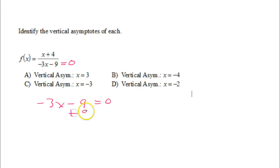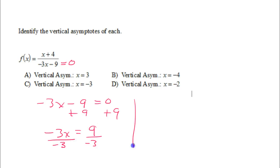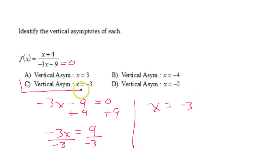I'm going to add 9 to both sides. That's going to give me negative 3x is equal to positive 9. Then when I divide both sides by negative 3, I'm going to get x equals negative 3. That's why the answer is C.